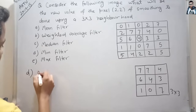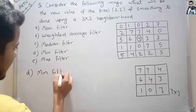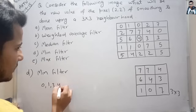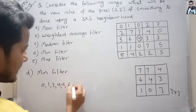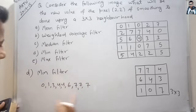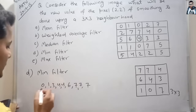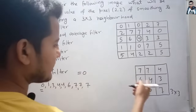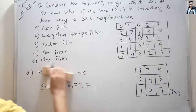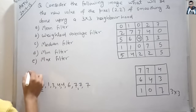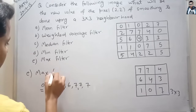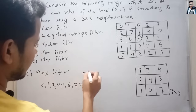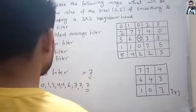Next is the min filter. The sorted values are 0, 1, 3, 4, 4, 6, 7, 7, 7, and the minimum value is 0. So the min filter gives a pixel value of 0. And when we apply the max filter, the value will be equal to 7, which is the maximum value. So the value of this pixel is 7 when applying the max filter.